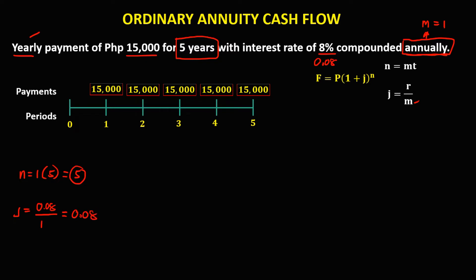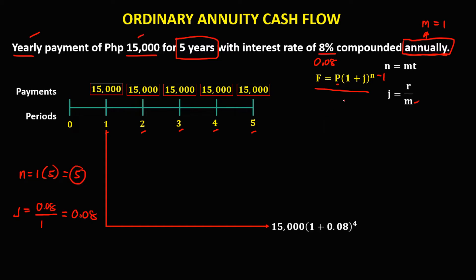Now to solve for the values for years 1 through 5 using this formula, we subtract 1 from n for each year. For year 1, the periodic payment P is 15,000 pesos times (1 + j), where j is 0.08, to the power of n minus 1. Since n equals 5, that exponent is 5 minus 1, which equals 4.